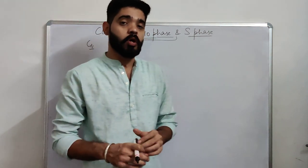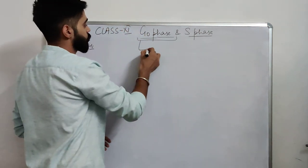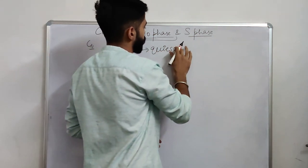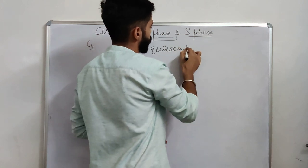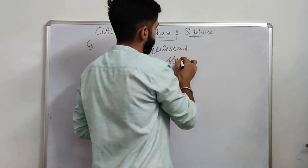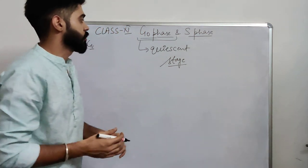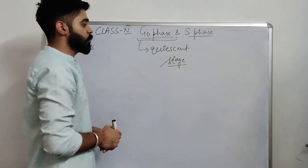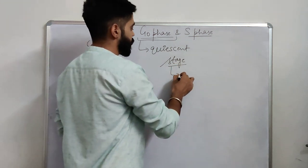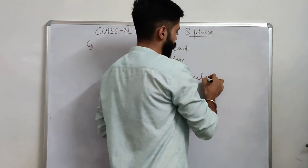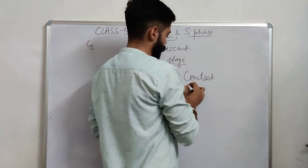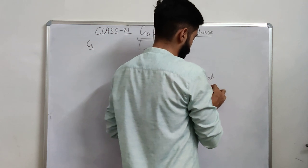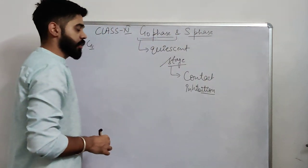The G1 phase is also known as the quiescent stage, and this quiescent stage directly depends upon contact inhibition.